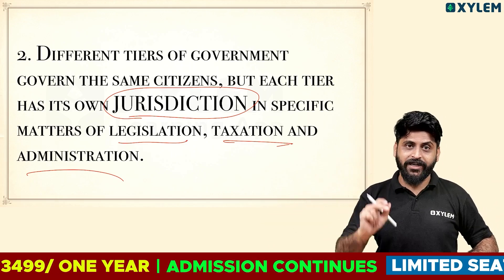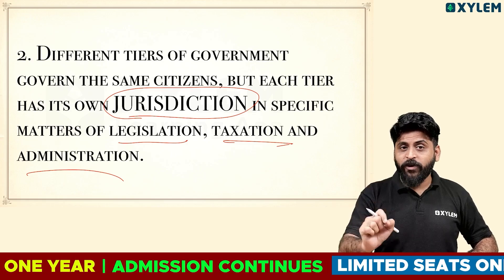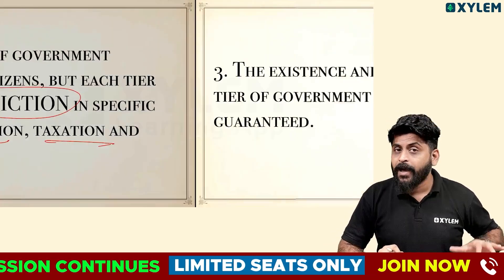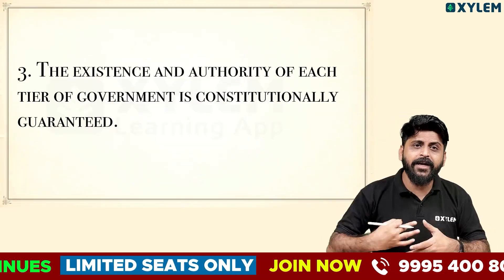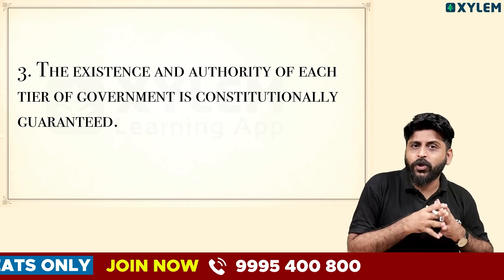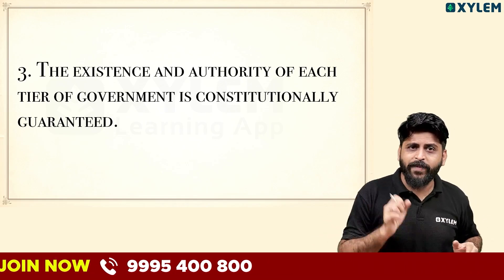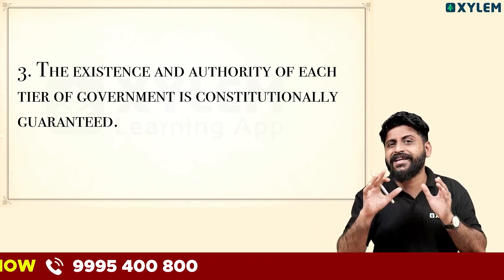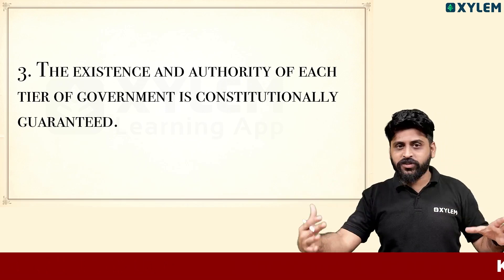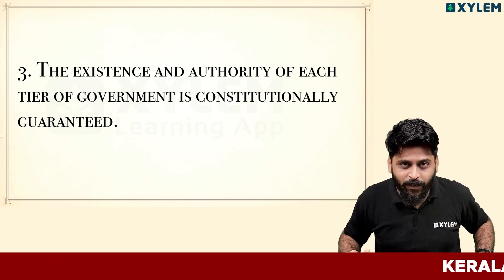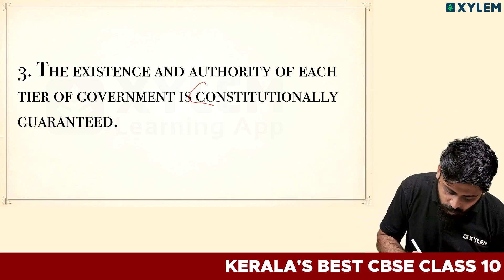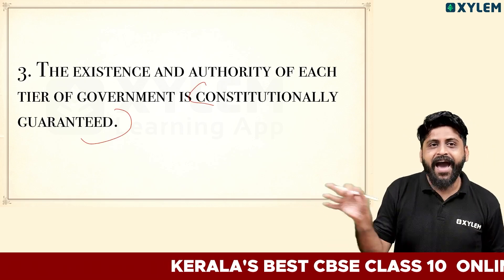The second feature is that each level of government has its own jurisdiction. The third feature: the existence and authority of each tier of government is constitutionally guaranteed. Each government has their own jurisdiction, constitutionally guaranteed.